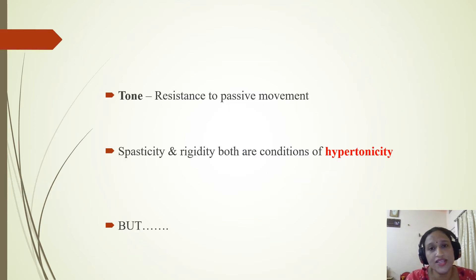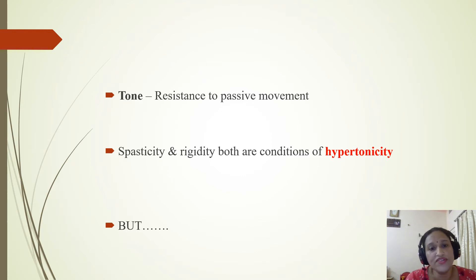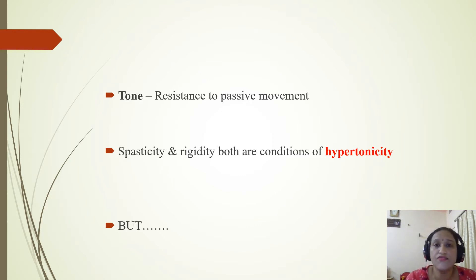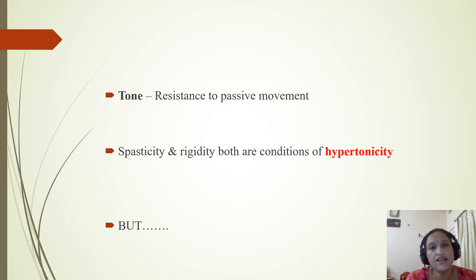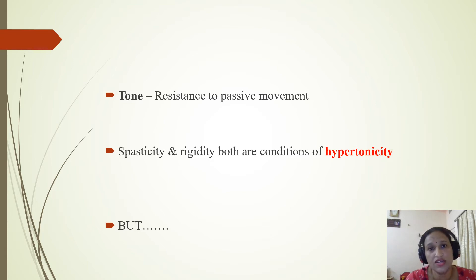Both of these are part of examination of tone while we are examining the central nervous system of a child. Tone is the resistance felt while we move the limb of the child passively. Spasticity and rigidity are both conditions of hypertonicity — that is, tone is increased in both conditions, but there are differences.